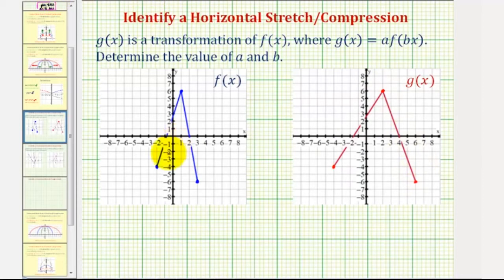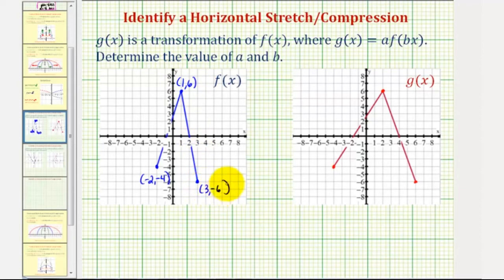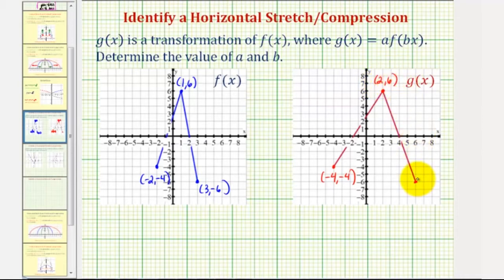For f of x, this point here has coordinates negative 2 comma negative 4. This point has coordinates 1 comma 6. And this point has coordinates 3 comma negative 6. And then for g of x, we would have negative 4 comma negative 4, 2 comma 6, and 6 comma negative 6.